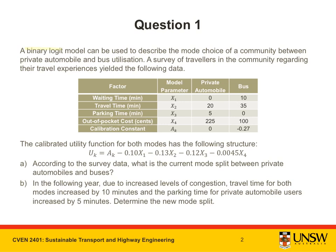A binary logit model can be used to describe the mode choice of a community between private automobile and bus utilisation. A survey of travellers in the community regarding their travel experiences yielded the following data. The calibrated utility function for both modes has the following structure.